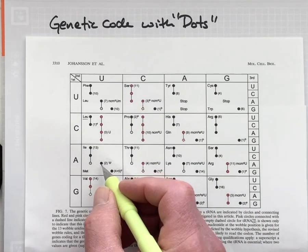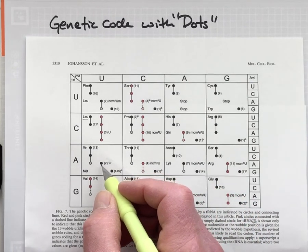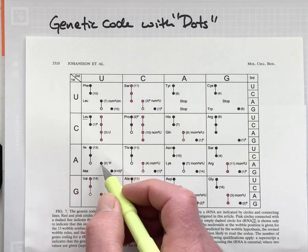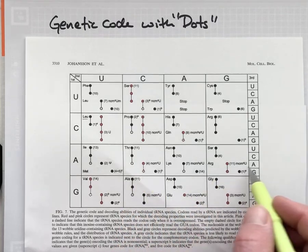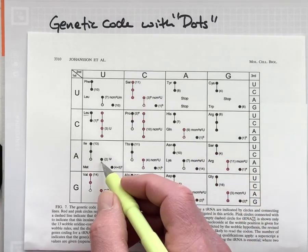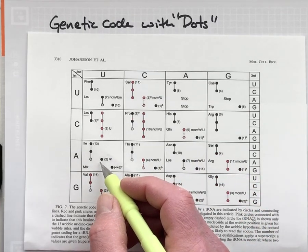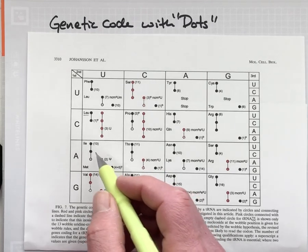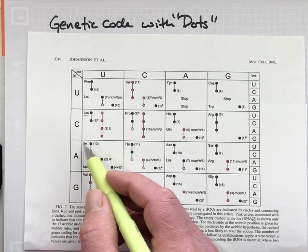Some tRNAs are only able to decode one codon, so this one here, AUA, decodes with this one tRNA.